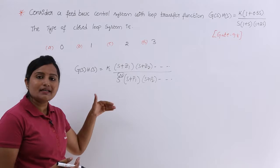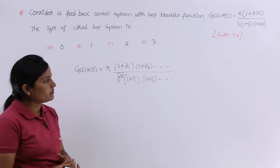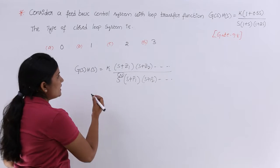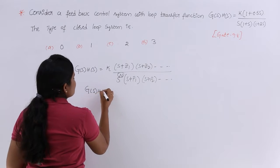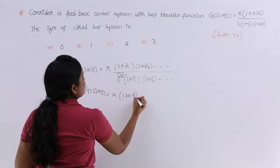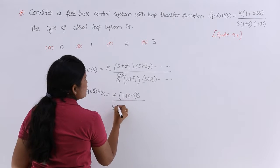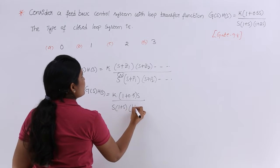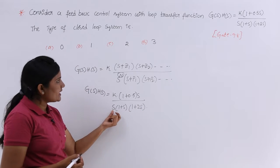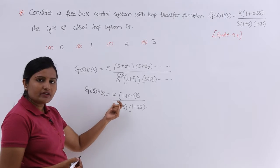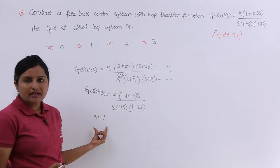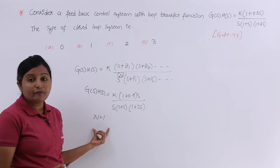We are going to determine the type number of the system by comparing this equation with the standard equation. The given G(s)·H(s) is equal to K·(1+0.5s) divided by s·(1+s)·(1+2s). Here I am having s, so s power 1 is present, meaning n equals 1 — this is a type 1 system.